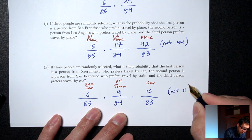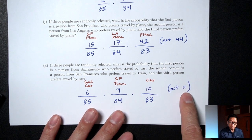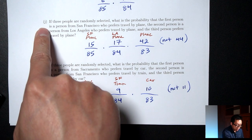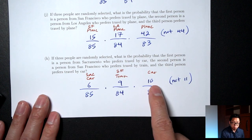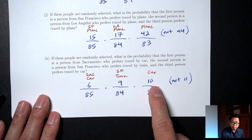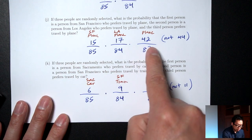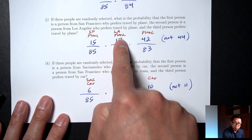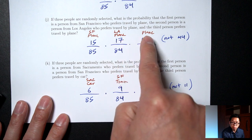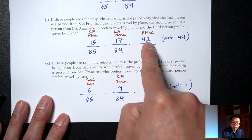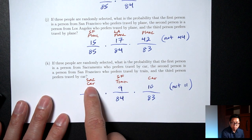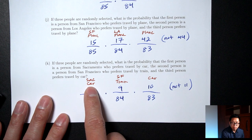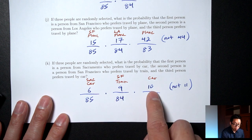In part J we had to reduce by two because we used two planes in the first two slots. In part K we reduced by one because we only used one car in the first two slots. Make sure you understand that difference.